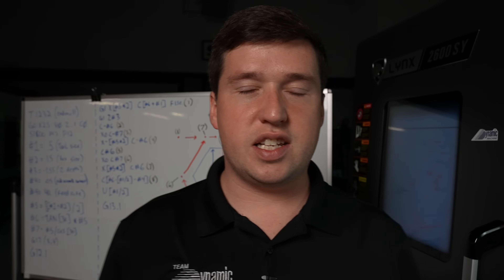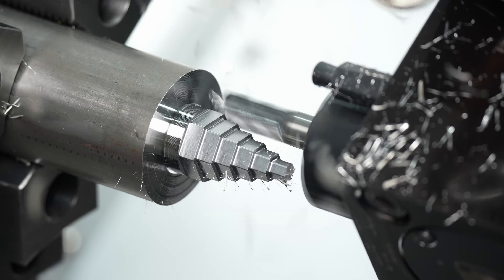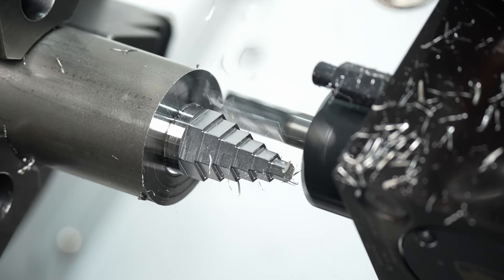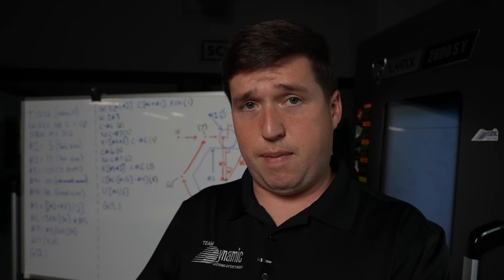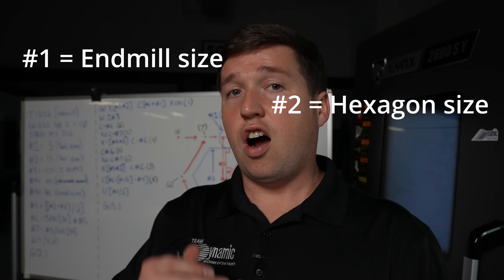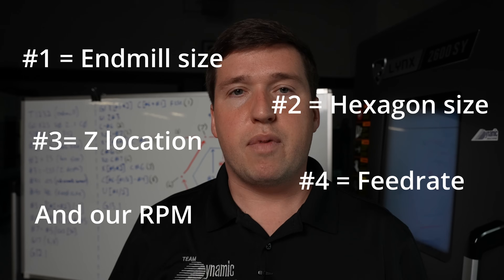What do we have to do in order to be successful in today's video? We need to take any size end mill we want and make any size hexagon we want, like the one you see on this part right here. We're going to input information like our end mill size, our hexagon size, our Z location, our feed rate, and our RPM, and the machine is going to take care of the rest.